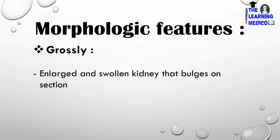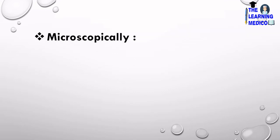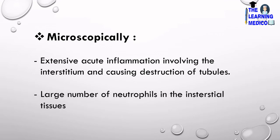Morphologic features: grossly, the kidney appears enlarged and swollen, bulging on section, because abscess formation occurs and kidney size enlarges. The cut surface shows small yellow-white abscesses with hemorrhagic areas. Microscopically, there is extensive acute inflammation involving the interstitium, causing destruction of the tubules, and a large number of neutrophils are seen in the interstitial tissues — neutrophils appear as the first line of defense.